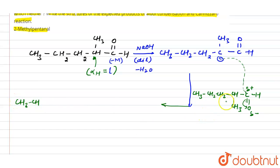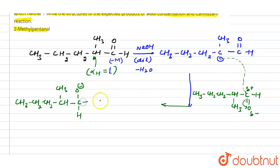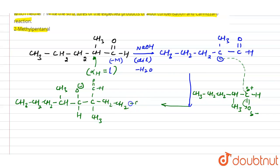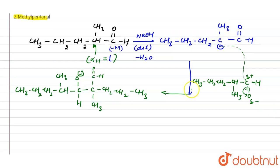The intermediate aldol product has the two molecules joined: the carbanion carbon is now bonded to the former carbonyl carbon, which becomes C–O−. The structure includes the CH3 branch and a C=O group from the original aldehyde end, with three CH2 and a CH3 at the other end.